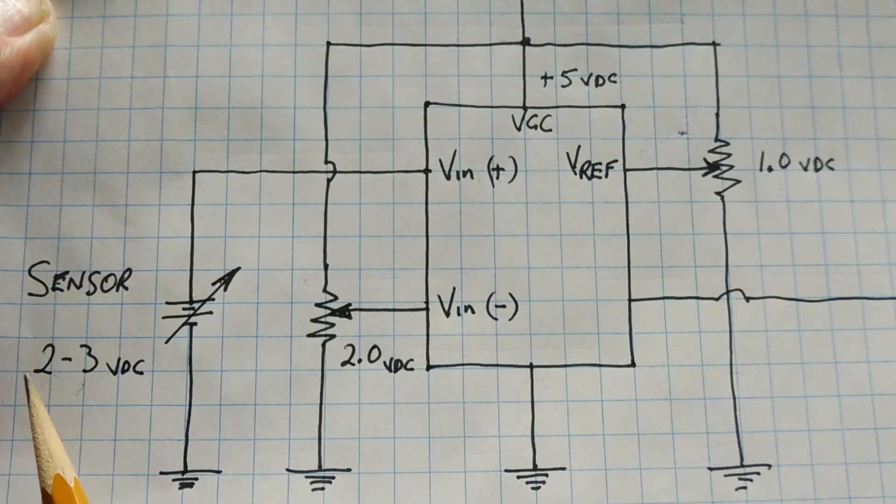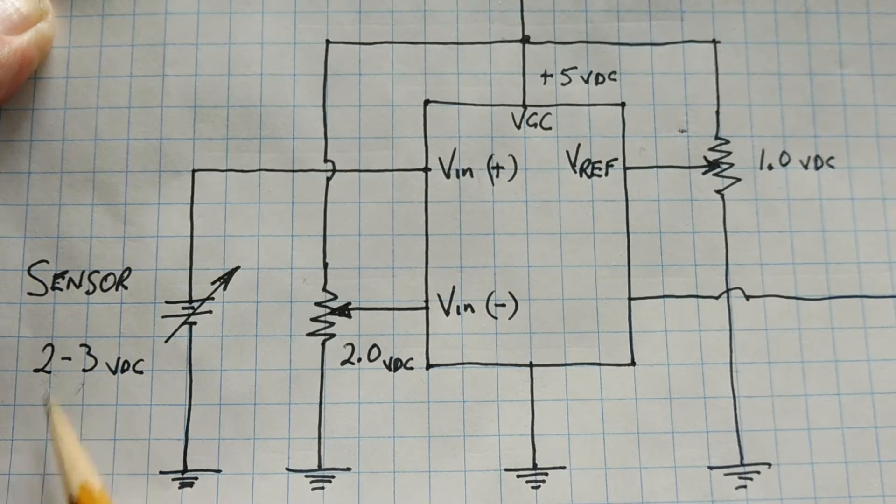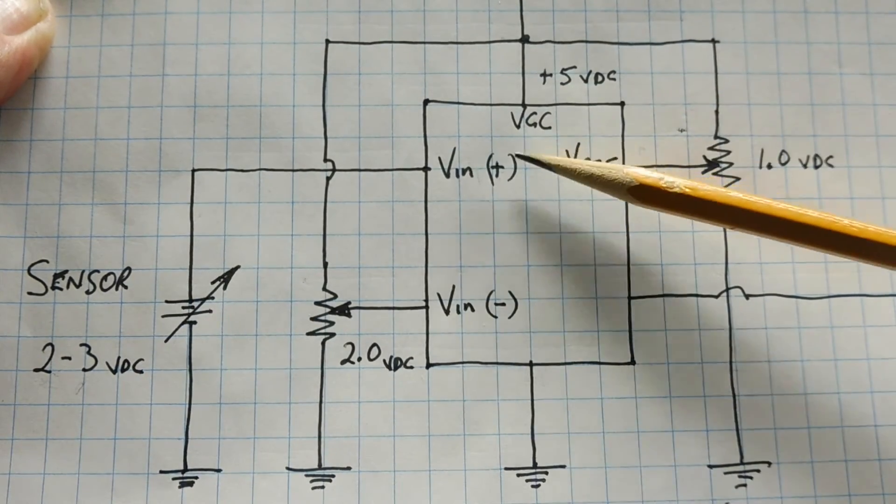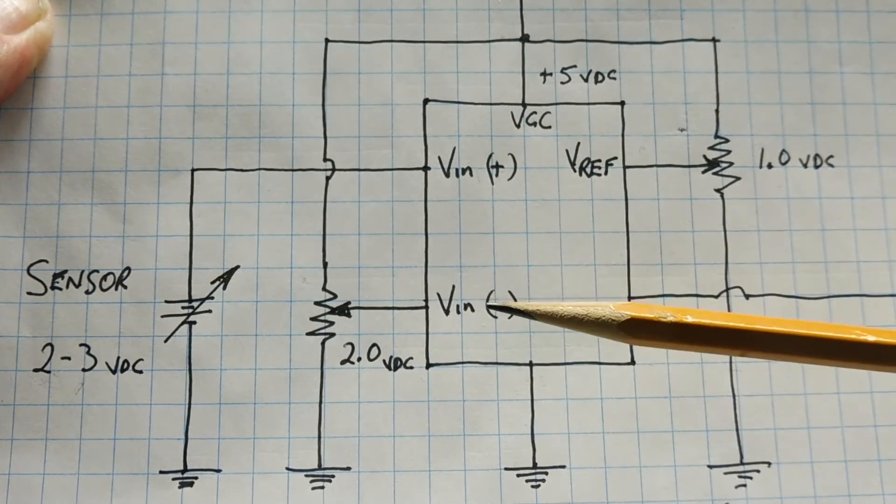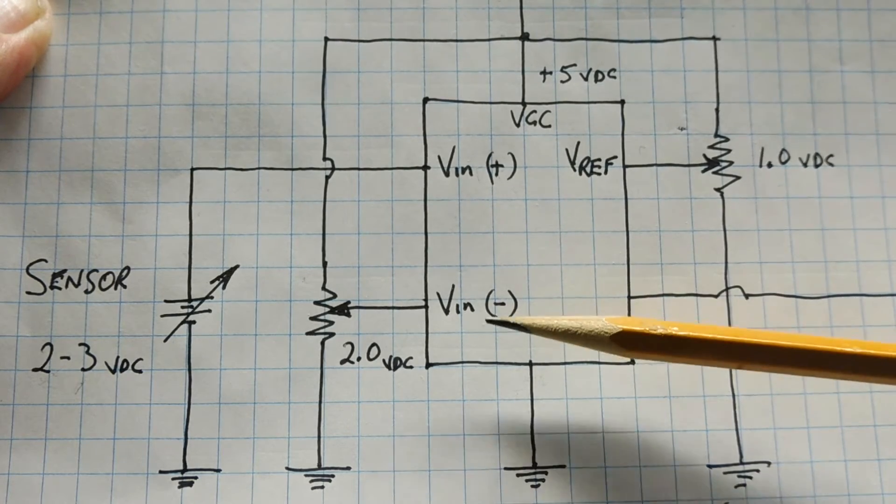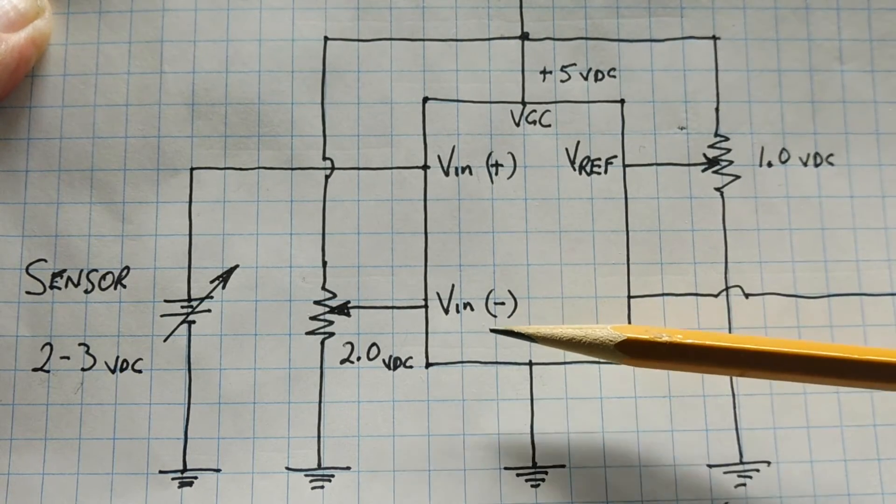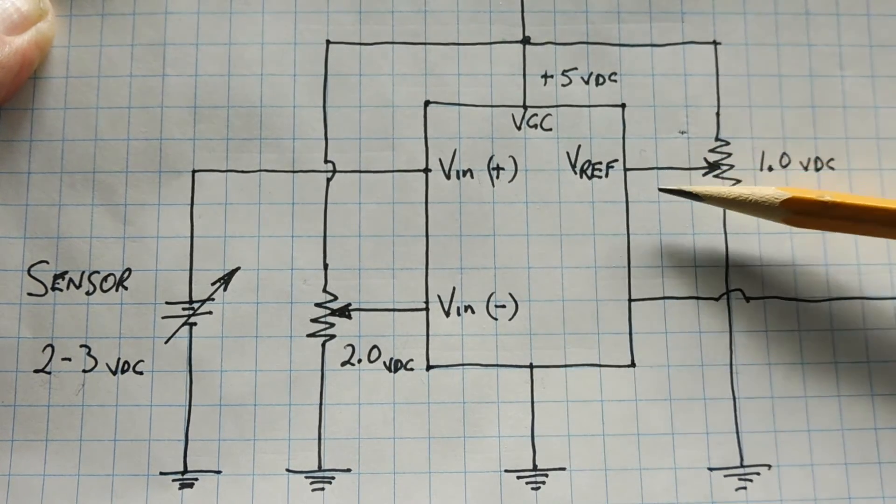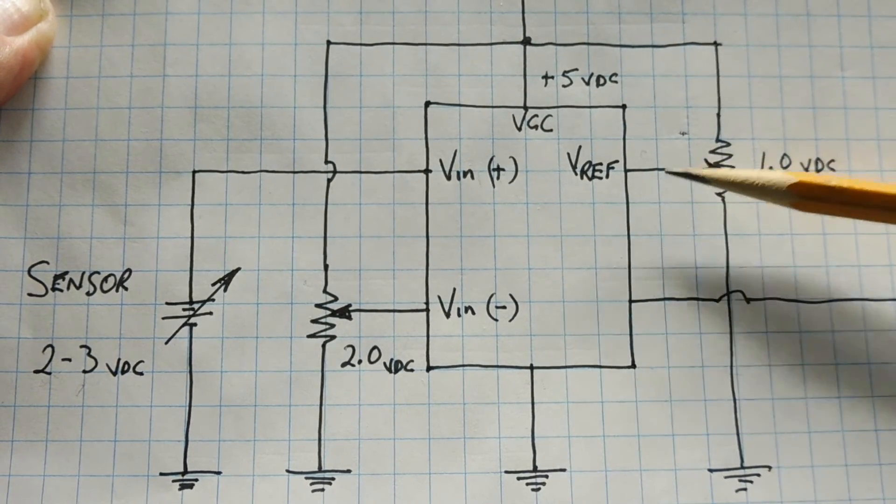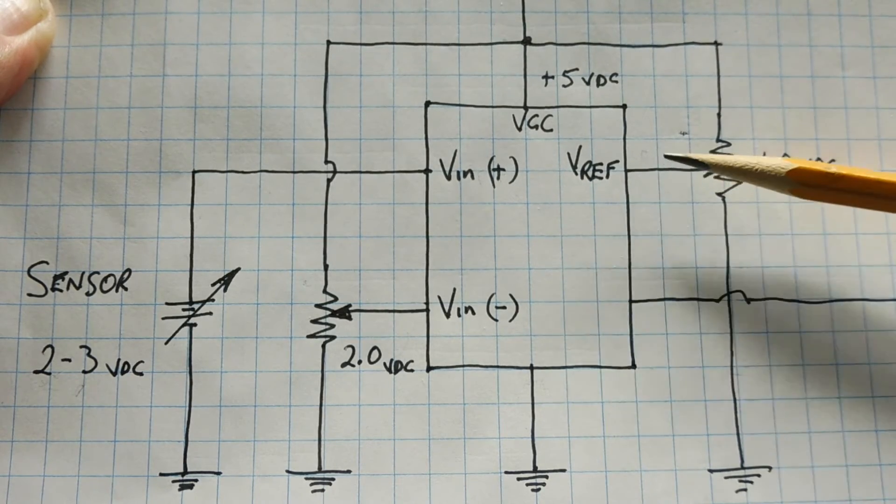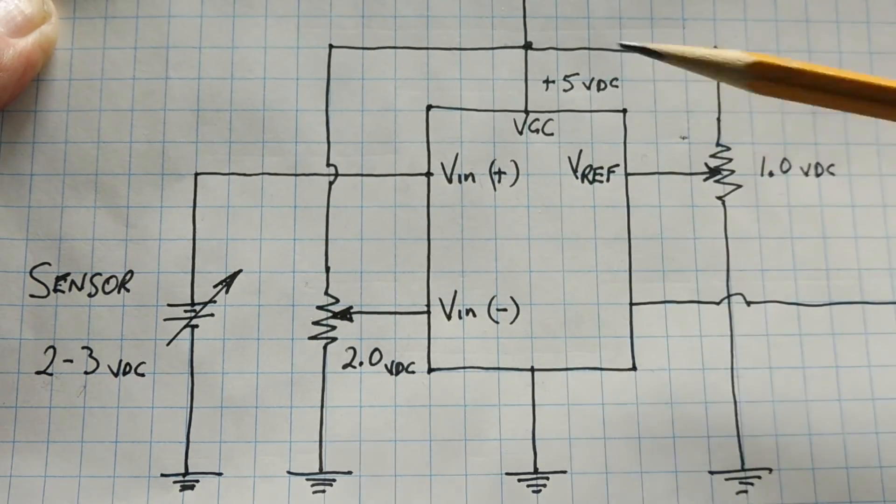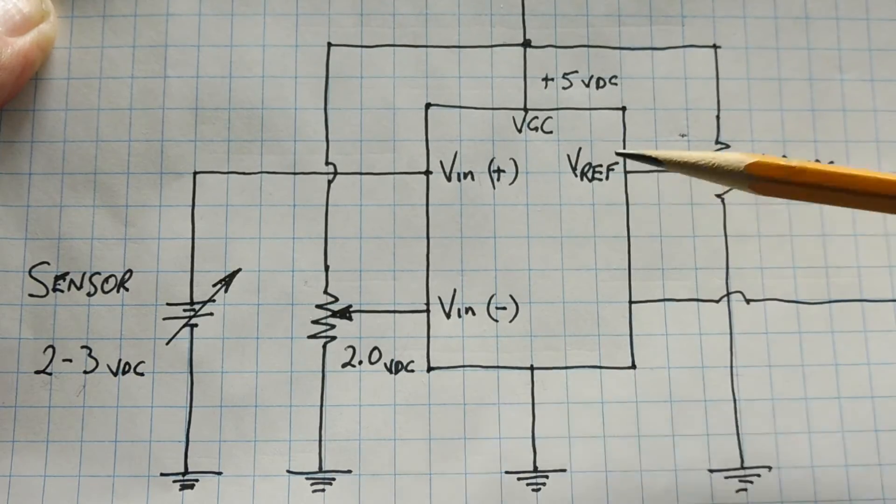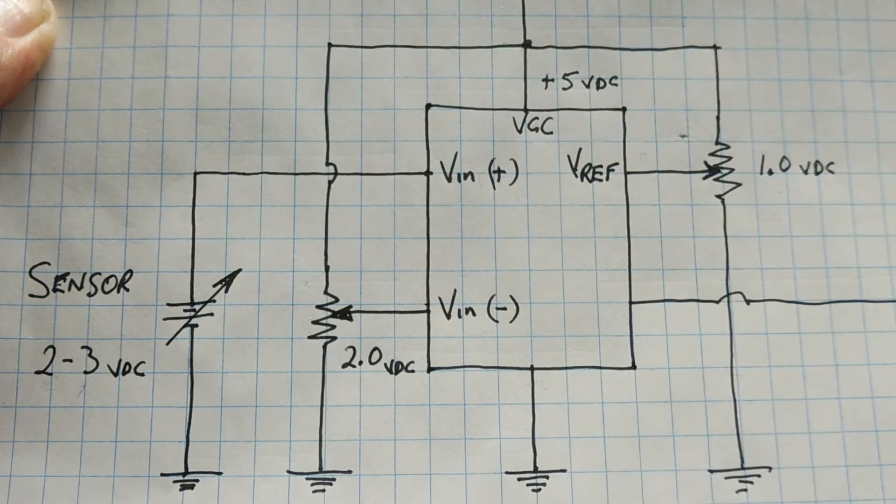Now, the sensor has an output span of 2 to 3 volts, and that's fed into the VIN plus. Now, we apply an offset voltage of 2 volts to the VIN minus, and that sets the ADC minimum voltage to 2 volts. And we apply 1 volt to the VREF pin, which sets the ADC maximum voltage to 3 volts. So, now our ADC is set up for a range of 2 to 3 volts, with a maximum resolution of 8 bits.